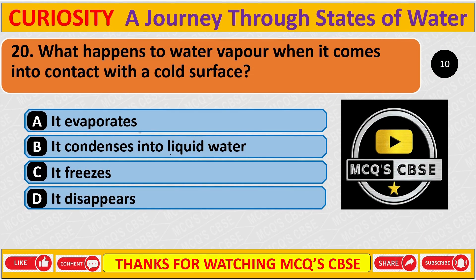What happens to water vapour when it comes into contact with a solid surface? The correct answer is B: It condenses into liquid water.